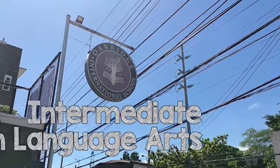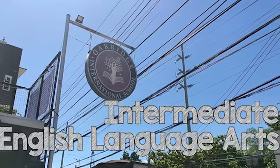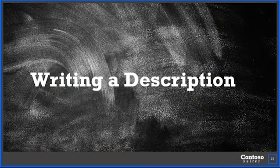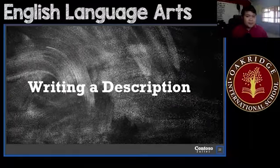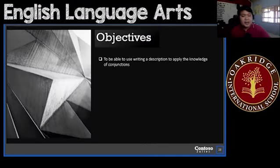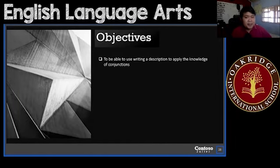Welcome to Intermediate Level English Language Arts. We're going to be discussing the last topic for week 3. This last topic is writing a description. Now let us go through the different objectives. We only have one main objective here: to be able to use writing a description to apply the knowledge of conjunctions.